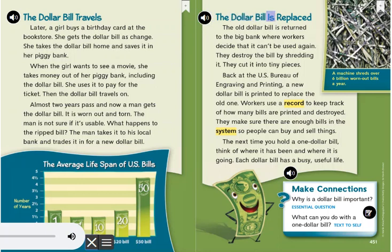The dollar bill is replaced. The old dollar bill is returned to the big bank, where workers decide that it can't be used again. They destroy the bill by shredding it, cutting it into tiny pieces. Back at the U.S. Bureau of Engraving and Printing, a new dollar bill is printed to replace the old one. Workers use a record to keep track of how many bills are printed and destroyed, making sure there are enough bills in the system so people can buy and sell things.